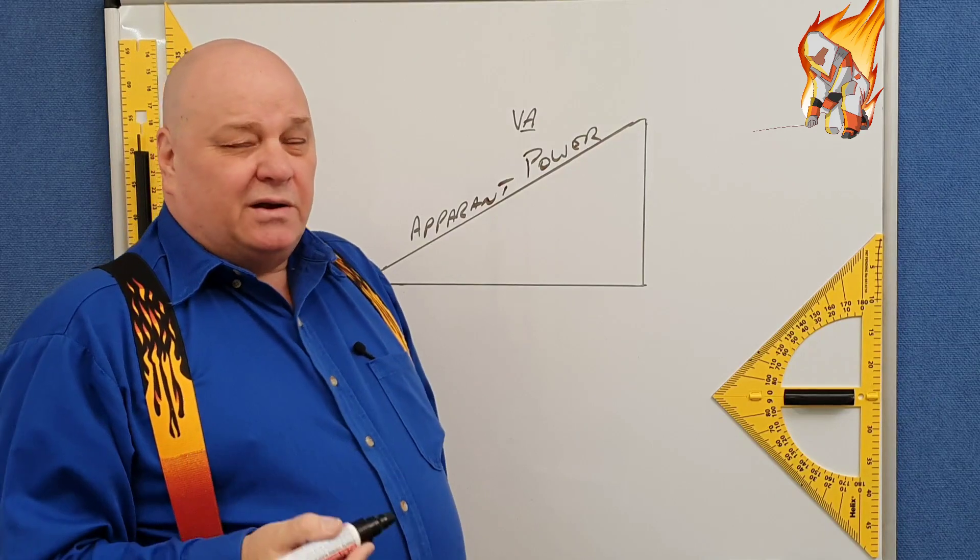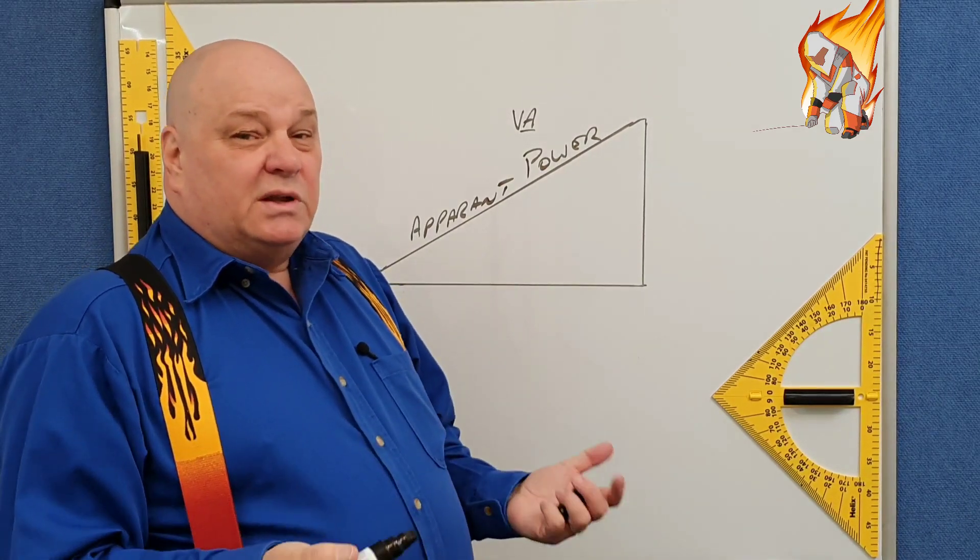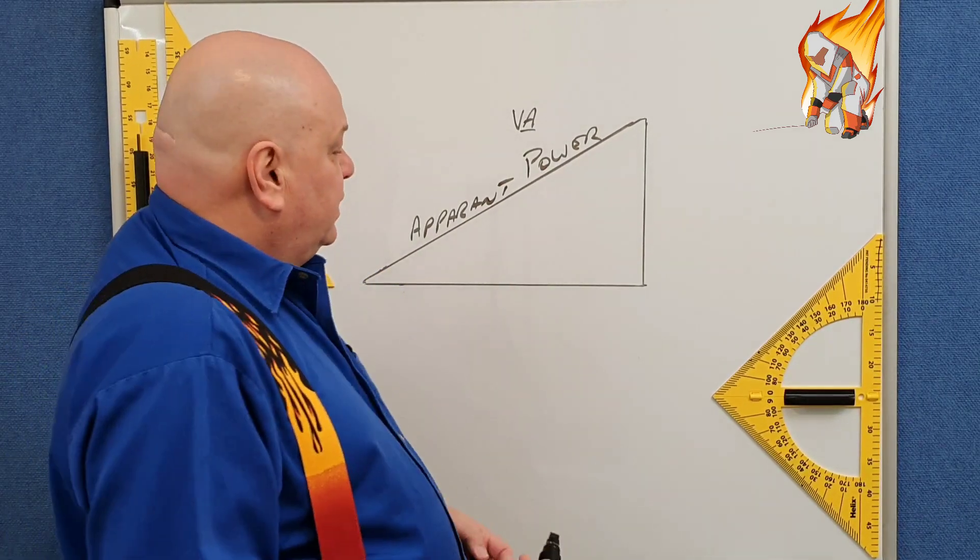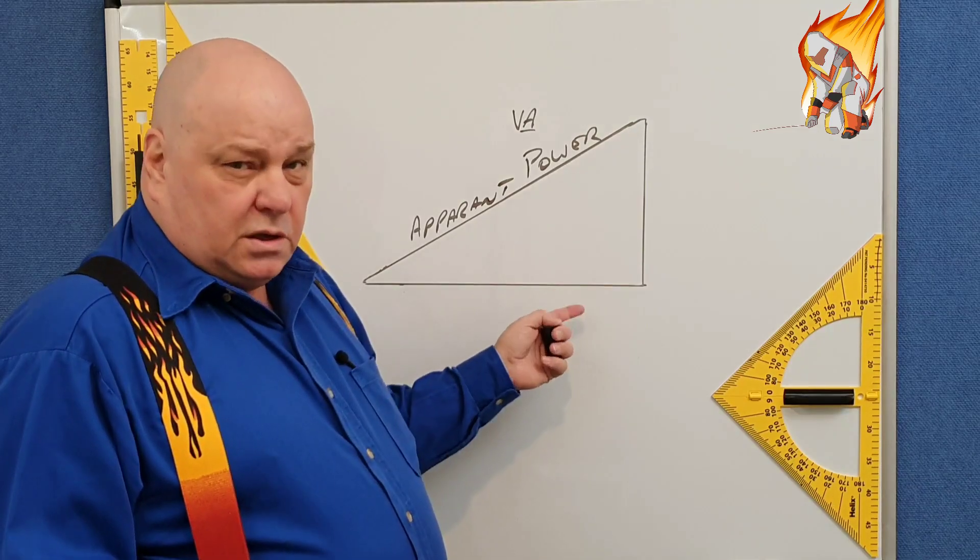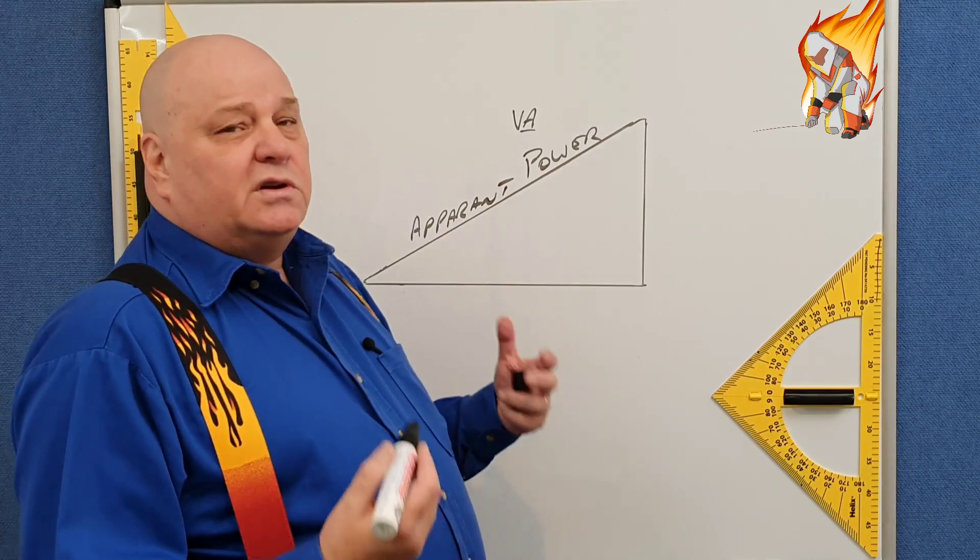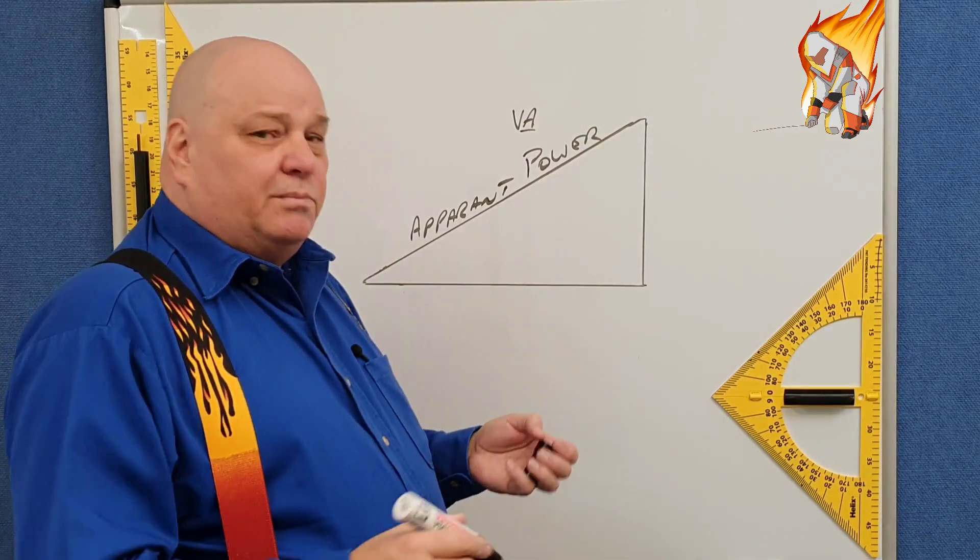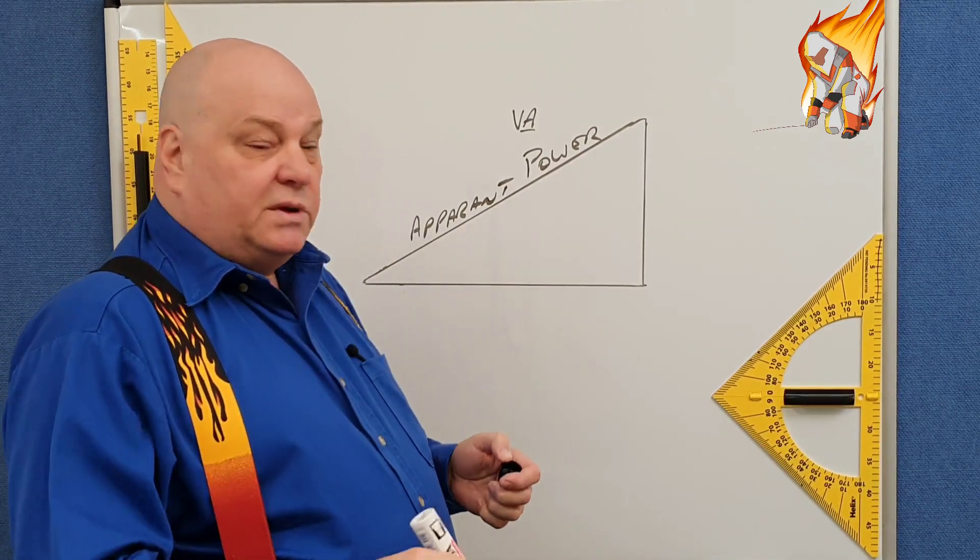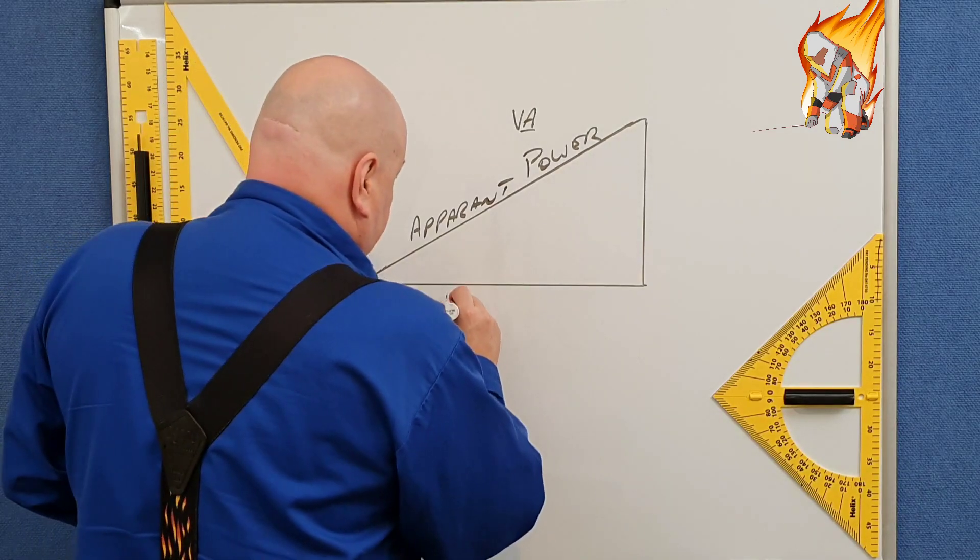And so our true power is obviously going to be less because we've got losses. And the true power, you're going to find at the bottom of your triangle. So think of, for the truth, you've got to dig for it. You've got to get to the bottom of the matter. The truth is always going to be at the bottom. So this here is true power.